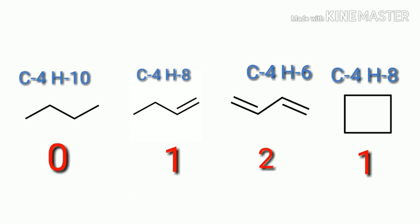Notice the trend: every decrease of 2 hydrogens increases the degree of unsaturation by 1. C4H10 to C4H8 has 2 fewer hydrogens, so degree of unsaturation increases by 1. C4H8 to C4H6 has 2 fewer hydrogens, so degree of unsaturation increases again. For cyclobutane, forming a ring from C4H10 loses 2 hydrogens, giving degree of unsaturation of 1.